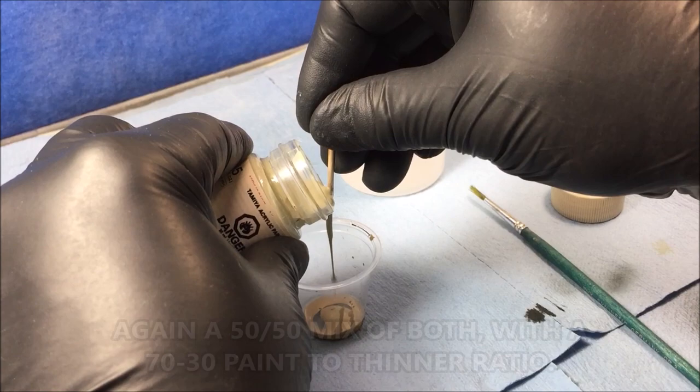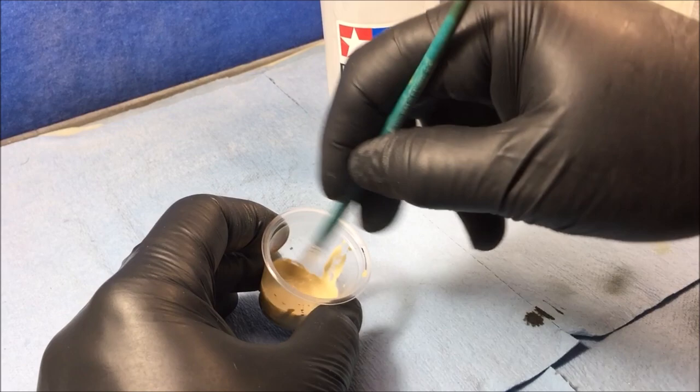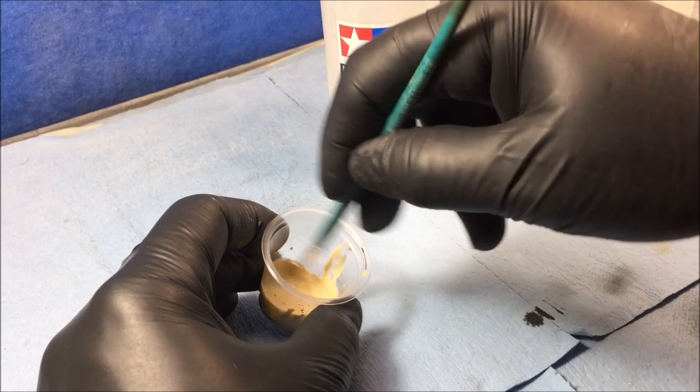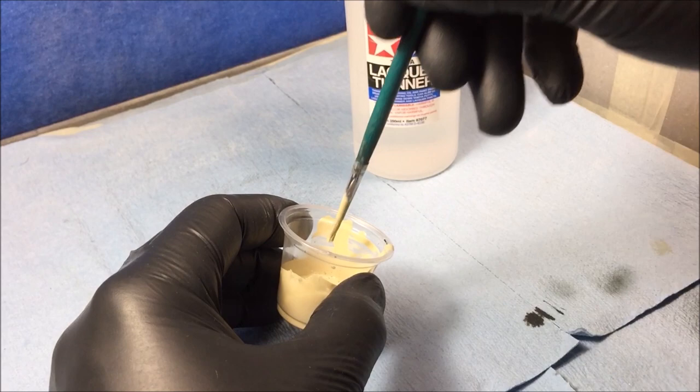Next up we'll be doing the highlights from the top. So again, spraying at about a 90 degree angle, keeping it at that position as much as possible, and you'll just keep spraying and working your way around the figure and hitting your highest highlights.